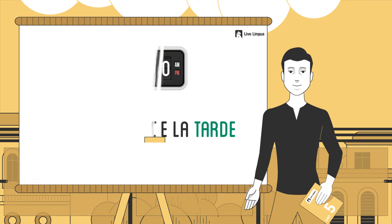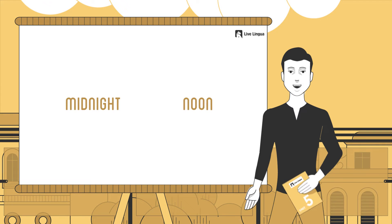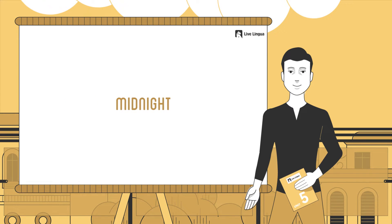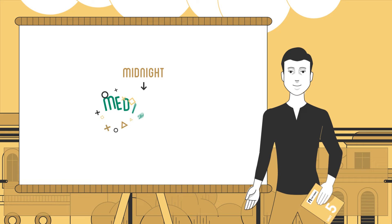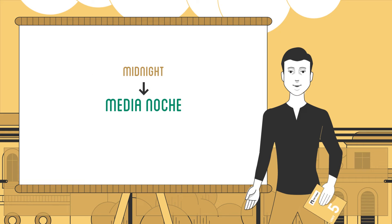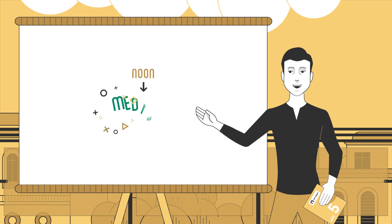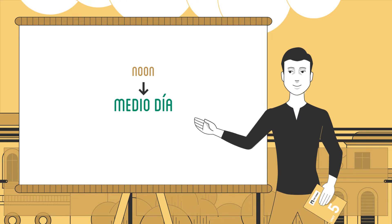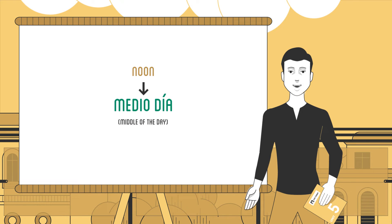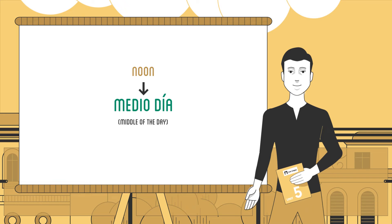The only two exceptions here, just like in English, are midnight and noon. To say midnight, you would say 'Media noche' — middle of the night. For noon, you would say 'Medio día.' Medio día. This translates to 'middle of the day.'